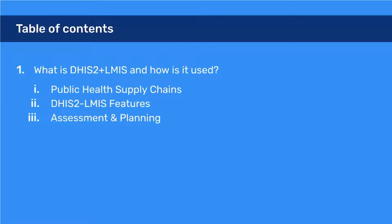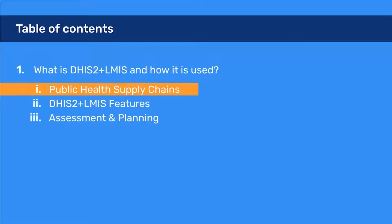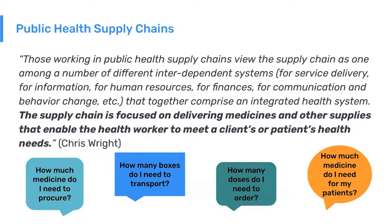So what is DHIS2 LMIS and how is it used? Starting with public health supply chains: those working in public health supply chains view the supply chain as one among a number of different interdependent systems for service delivery, information, human resources, finances, communication, and behaviour change, that together comprise an integrated health system.